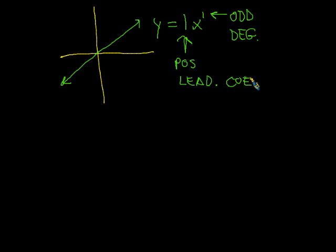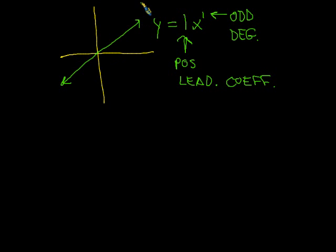It turns out that all odd degree polynomials with positive leading coefficients will look like this positive sloping line on the ends. In between, they'll have some curves and some zigzags, but on the ends, as we go to the right they'll go up, and as we go to the left they'll go down. That's the end behavior of odd degree polynomials with positive leading coefficients.